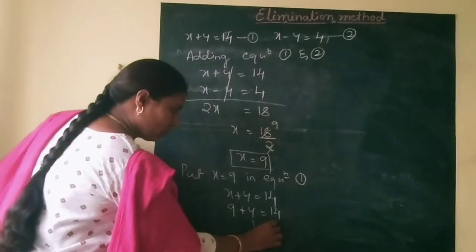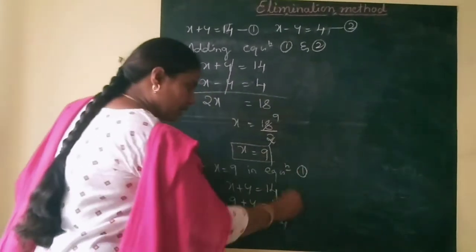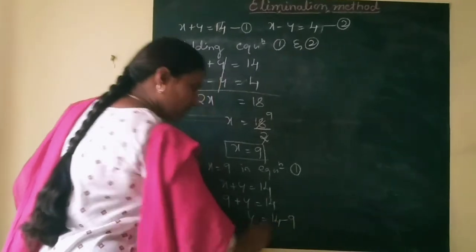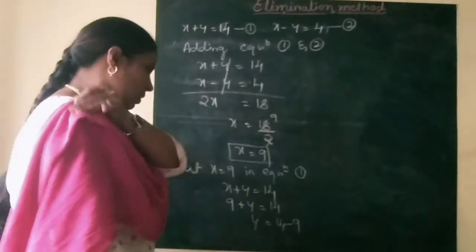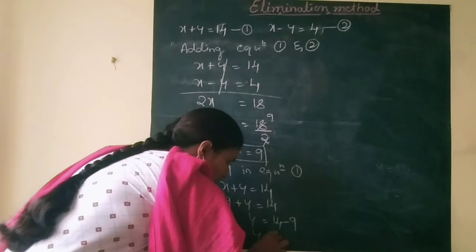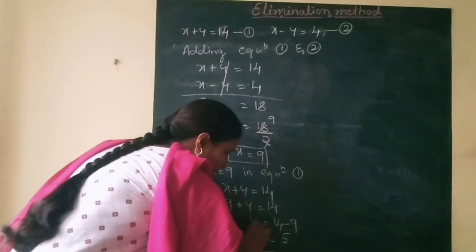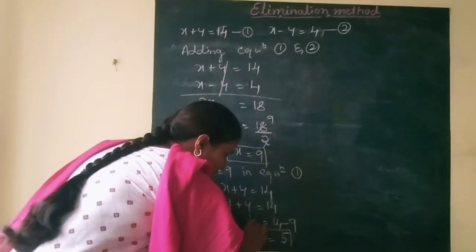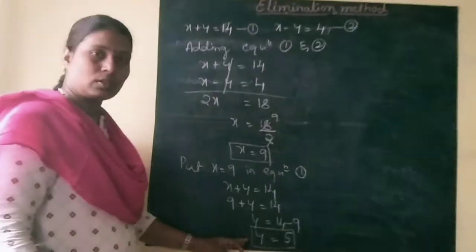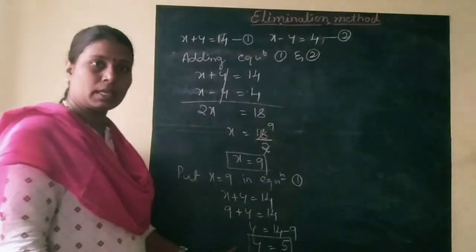So 9 plus y is equal to 14. Moving 9 to the right side, the sign changes: y is equal to 14 minus 9, which is 5. Therefore y is equal to 5. So the final answer is x is equal to 9 and y is equal to 5. Thank you.